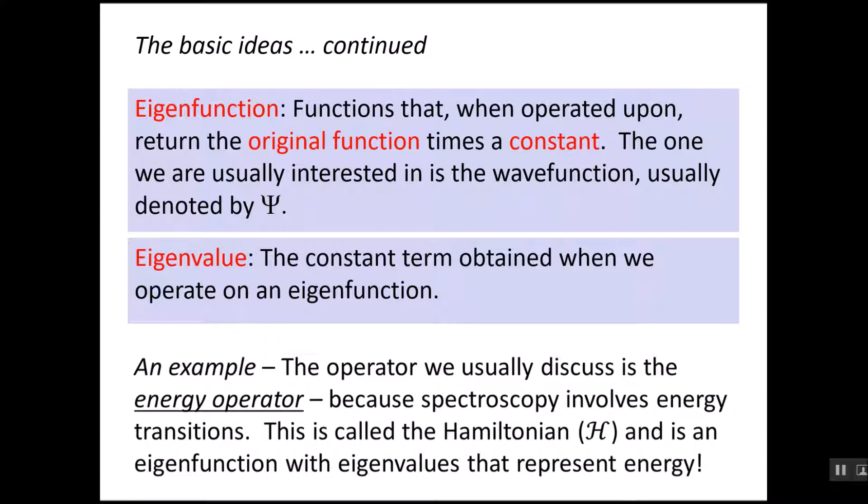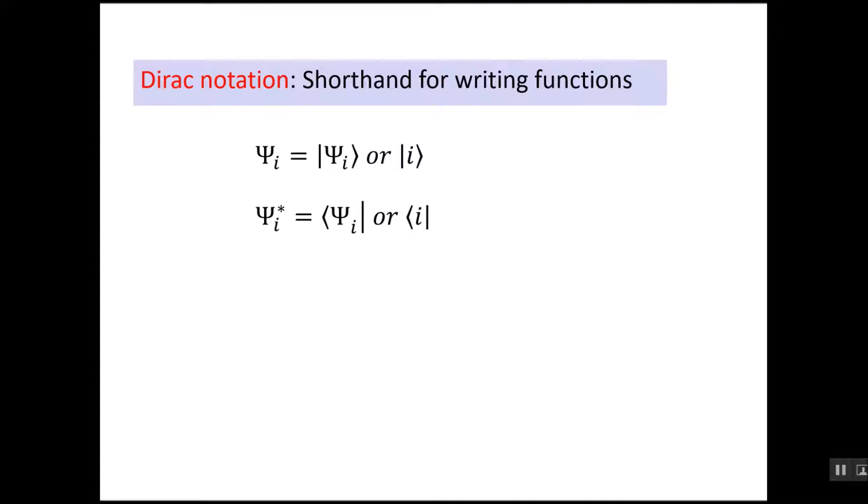An example we often see in quantum mechanics is the operator that's the energy operator. We use this one because spectroscopy usually involves energy transitions. The energy operator is called the Hamiltonian, and its eigenfunctions are the energy. The constant terms are the energies.